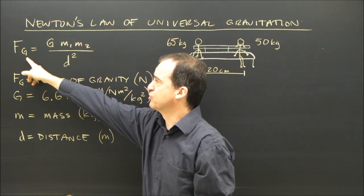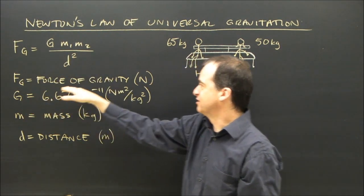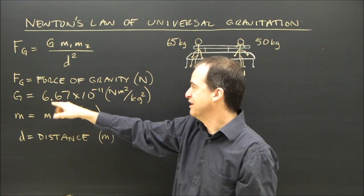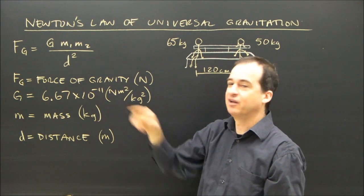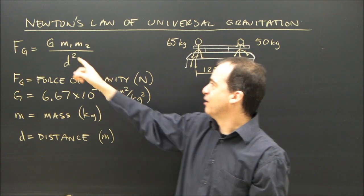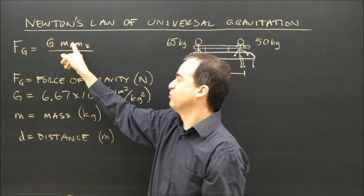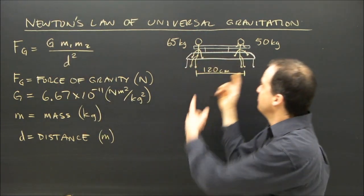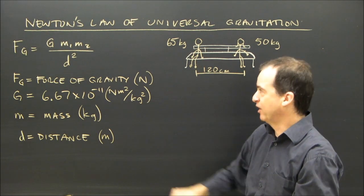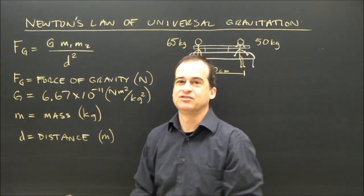The formula is the force of gravity is G, that's the universal gravitational constant, and it's 6.67 times 10 to the minus 11, times either the first, well times both masses. It doesn't matter which one you call M1 or M2. And divide it by the distance squared.